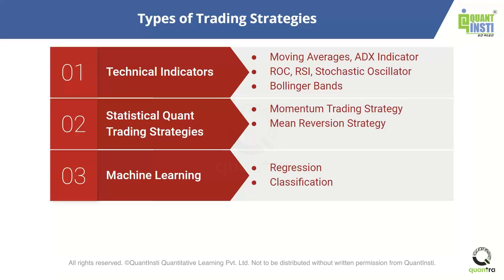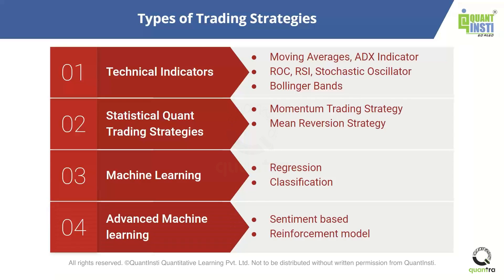Machine learning is not just regression and classification — we have also moved on to advanced trading strategies. We have sentiment-based trading strategies, which use Twitter data or news headlines from major publications to find sentiment. For example, take Apple: you can use data providers that give you news headlines, check whether Apple is mentioned, and determine whether the sentiment is positive or negative. If it's positive, you buy the stock; if it's negative, you sell the stock.